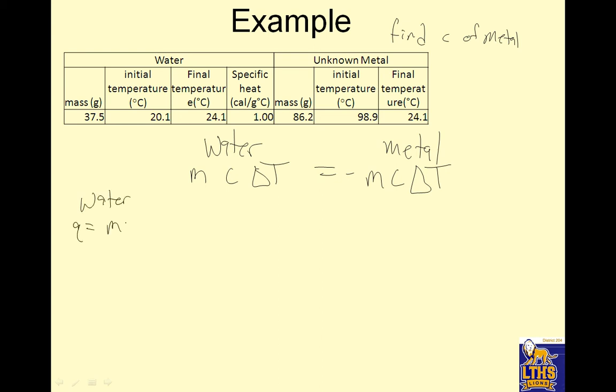Q equals MC delta T. So the mass of my water is 37.5. Specific heat of water is 1. Change in temperature of the water, final initial, is 24.1 minus 20.1. I can do that in my head. That's 4.0. So this is going to be 37.5 times 1 times 4 and 150 calories.